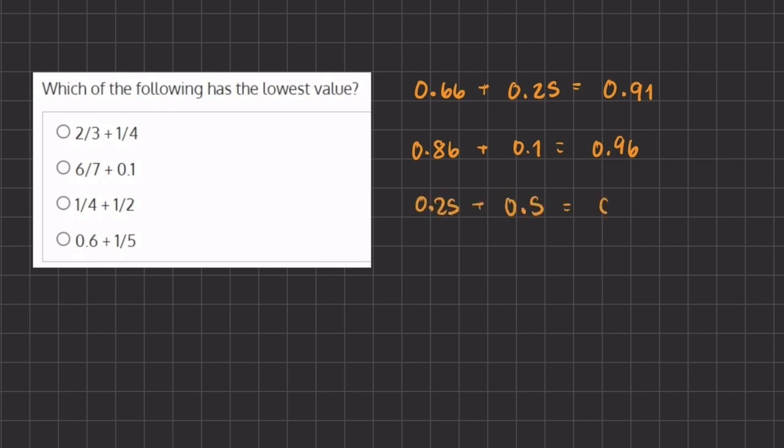Our last expression, 0.6 plus 0.2 which is one-fifth, gives us 0.8.